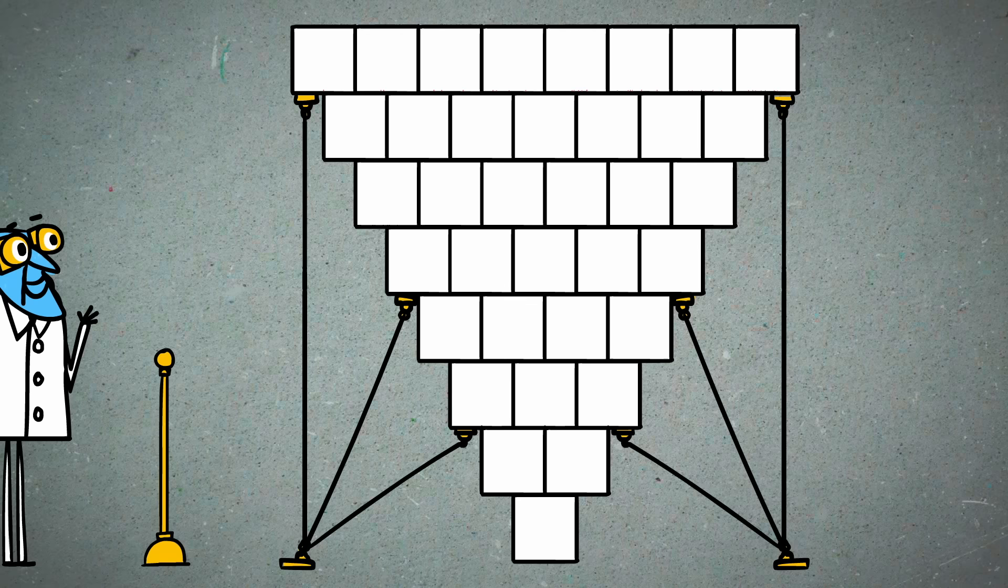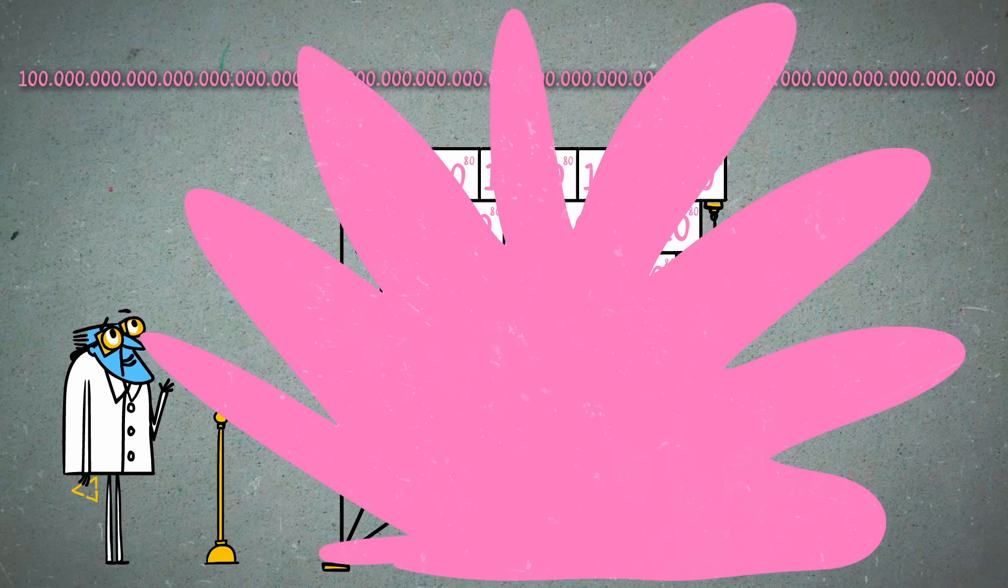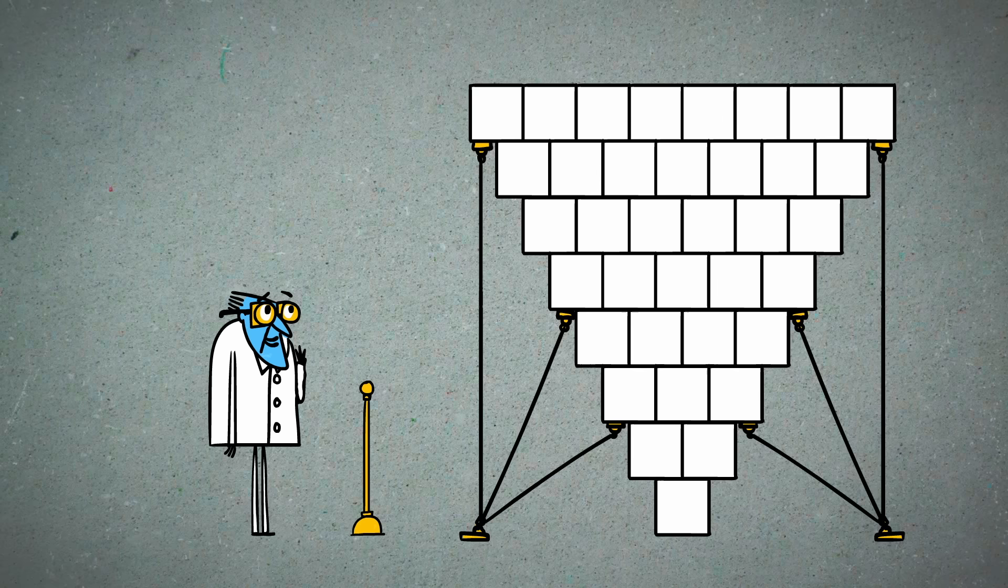Each cell can hold 10 to the 80th power nanorabbits—that's a 1 followed by 80 zeros—before they break free and overrun the world. Your calculations have given you a 46-digit number for the count of rabbits in the bottom cell—plenty of room to spare.